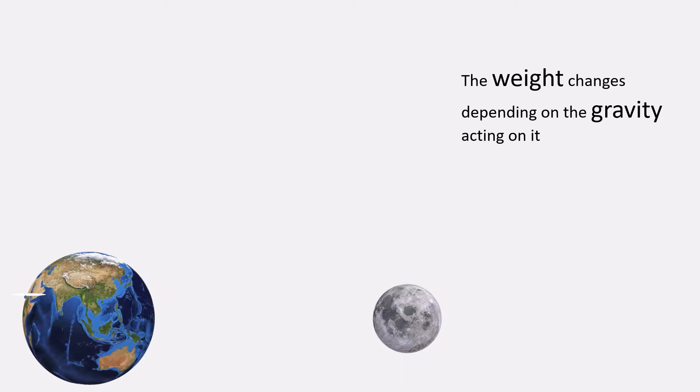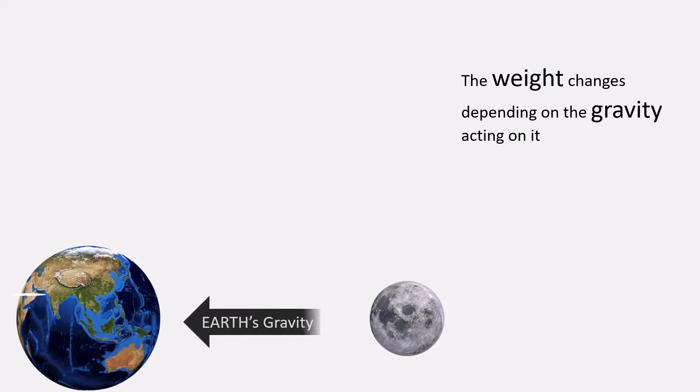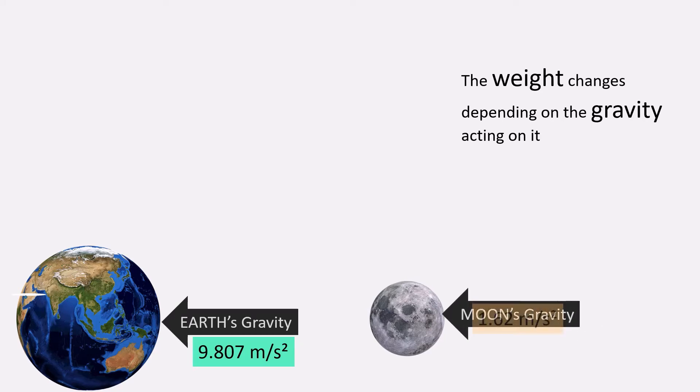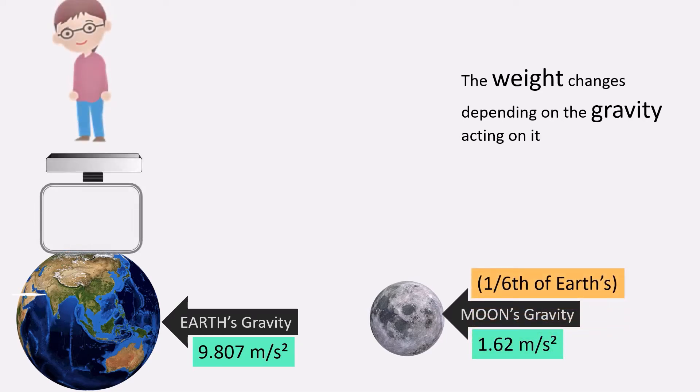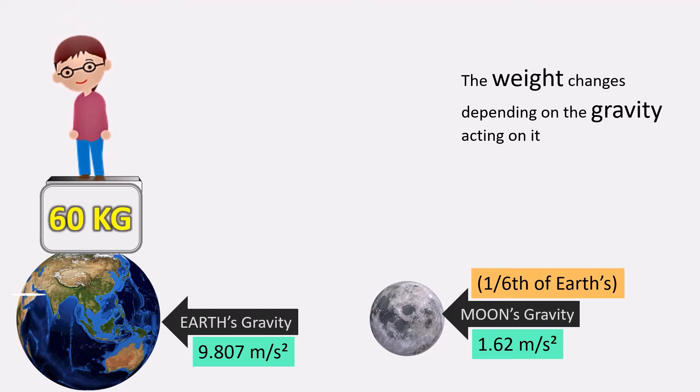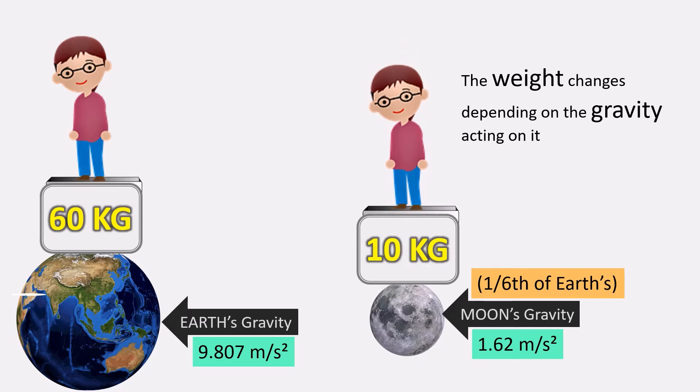The weight changes depending on the gravity. Earth's gravity is around 9.8 m per second square whereas moon's gravity is around 1.62 m per second square. So, if you weigh around 60 kg on the earth, your weight will be around 10 kg on the moon.